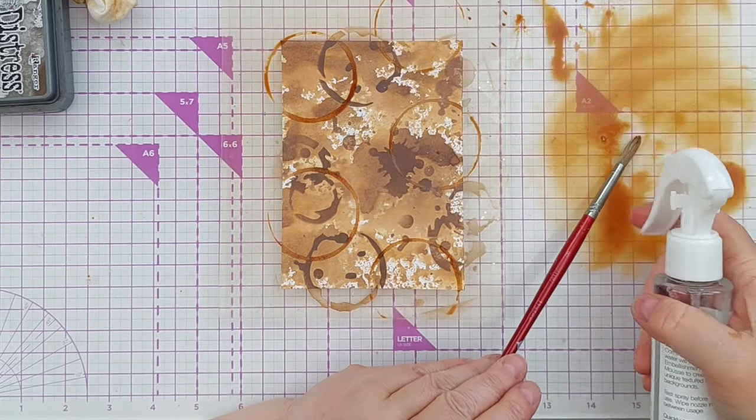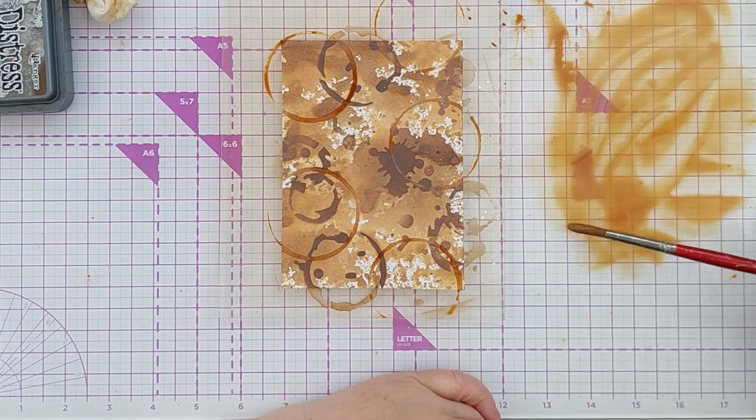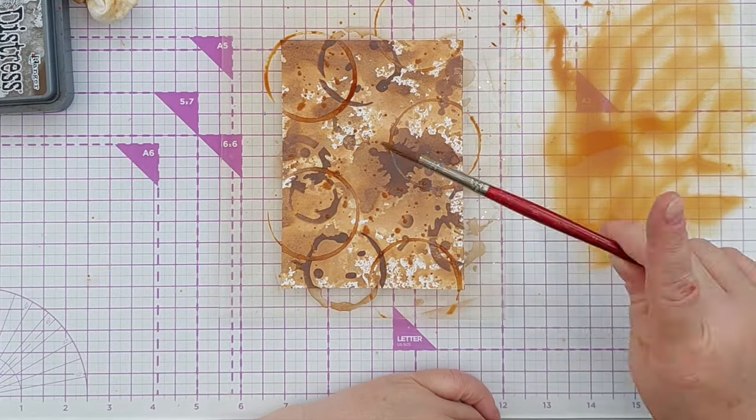I didn't want to waste the leftover ink though, so I picked it up with a paintbrush and spattered it on. So this piece of paper is now well and truly coffee stained.